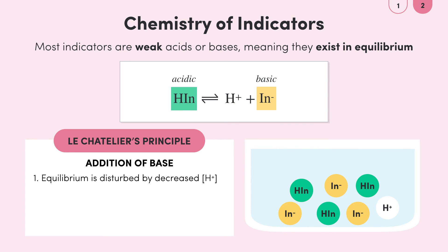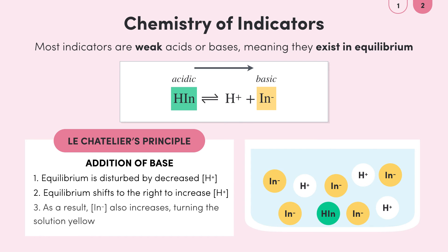According to Le Chatelier's principle the equilibrium will shift to the right to replace the lost concentration of hydrogen ions and over time the concentration of hydrogen ions and yellow In molecules increase and the solution turns yellow.